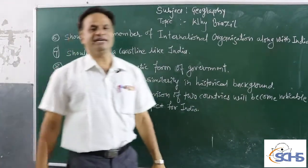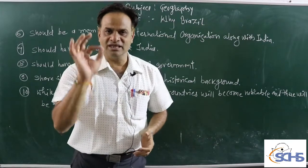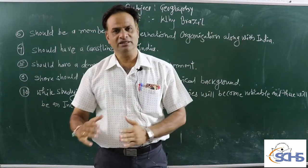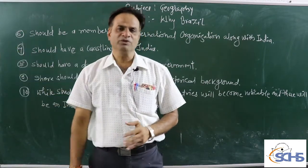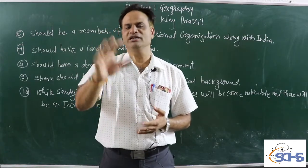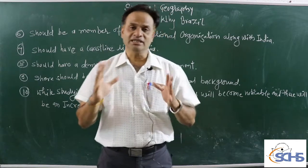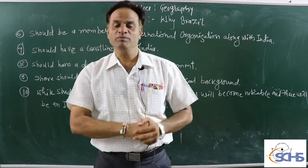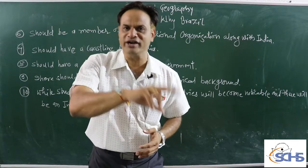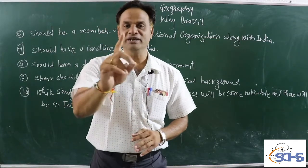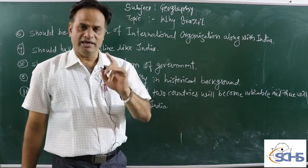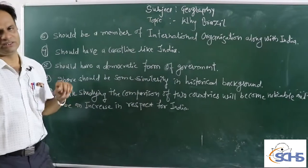Point number 7: the country should have a coastline like India. India's coastline distance is approximately 7,500 km. We also needed a country that similarly has a significant coastline. Brazil also has a long coastline. That is another reason why we are selecting Brazil.